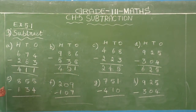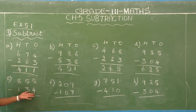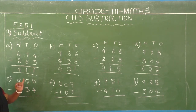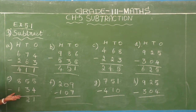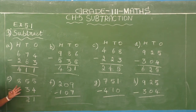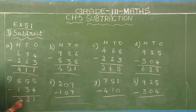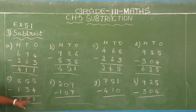E1: 855 minus 134. Ones place — second number 4, first number 5: 4 after 5. Difference is 1. Tens place — second number 3, first number 5: 3 after 4, 5. Difference is 2. Hundreds place — second number 1, first number 8: 1 after 2, 3, 4, 5, 6, 7, 8. Difference is 7. So 855 minus 134 equals 721.